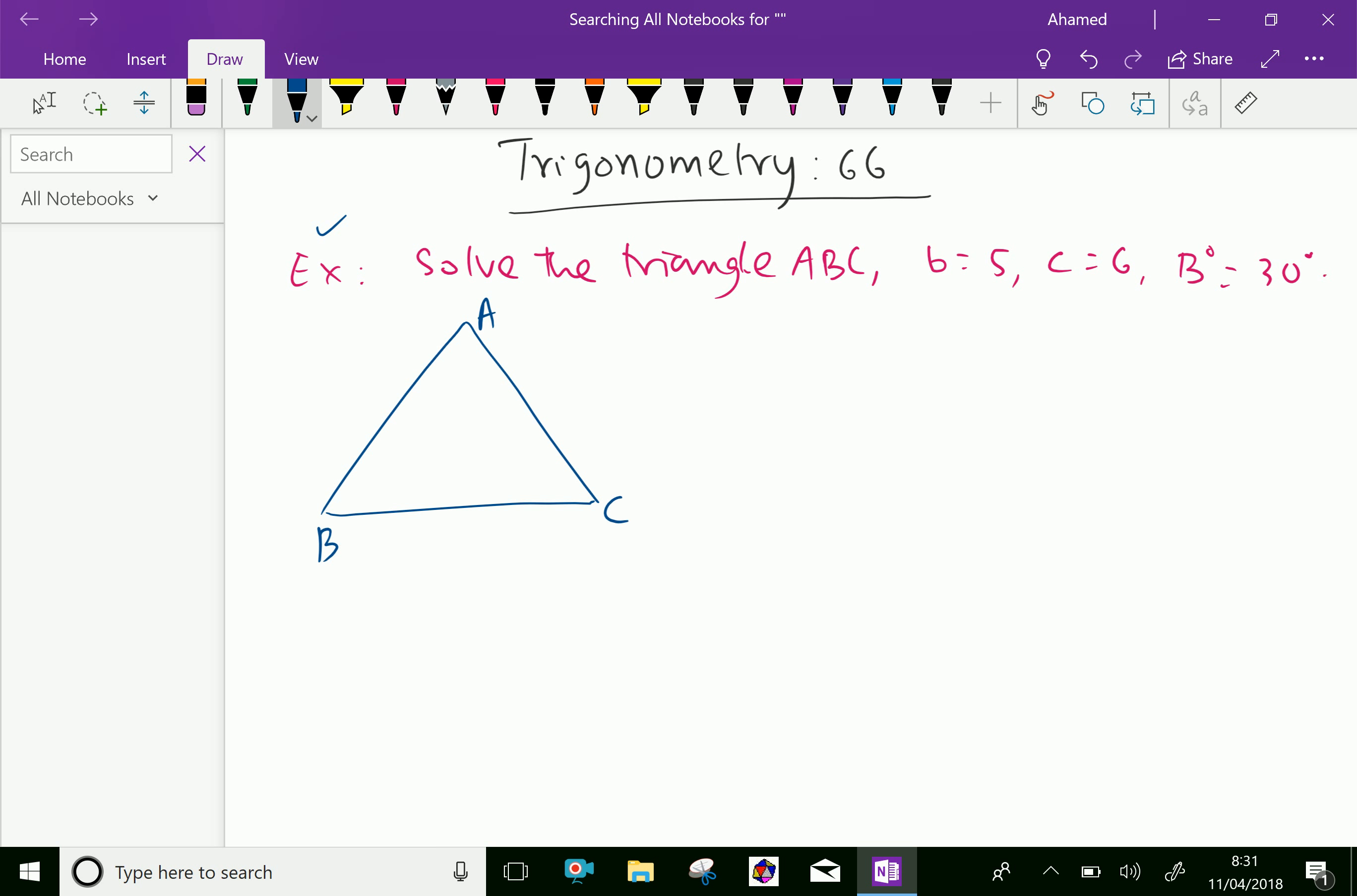Opposite A is small a, opposite B is small b, opposite C is small c. Angle B is 30 degrees given, and b equals 5 centimeters and c equals 6.